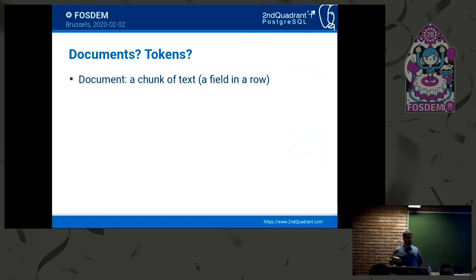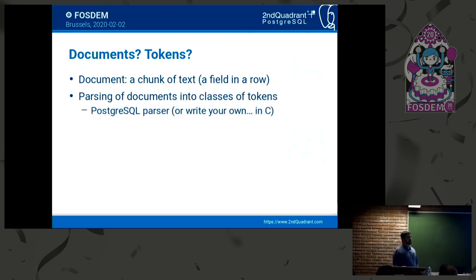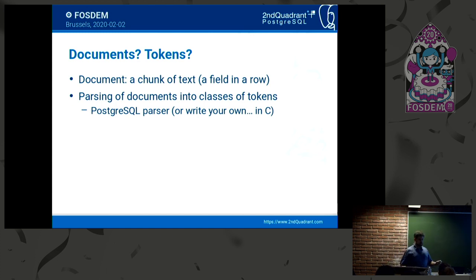Precision is how accurate your search results are — how many false positives or false negatives you're getting. Recall is how many results you're getting back based on that query — how restrictive is your query. These are influenced by stop words and stemming. A document is a chunk of text — a field in a row in a table. Any type of text is considered a document in this context. Parsing of documents into classes of tokens is what needs to be done next. Tokens can be strings, alphanumeric strings, numbers, or any character group that you define as interesting for your purposes.